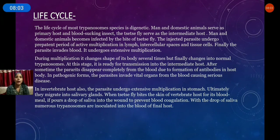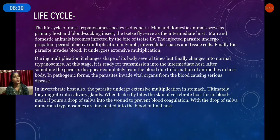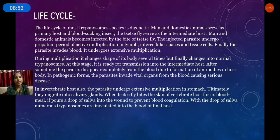Some species infect domestic animals and some infect human beings. The life cycle of most trypanosoma species is digenetic — two hosts. Man and domestic animals serve as the primary host, and the blood-sucking insect, the tsetse fly, serves as the intermediate host. Man and domestic animals become infected by the bite of the tsetse fly.